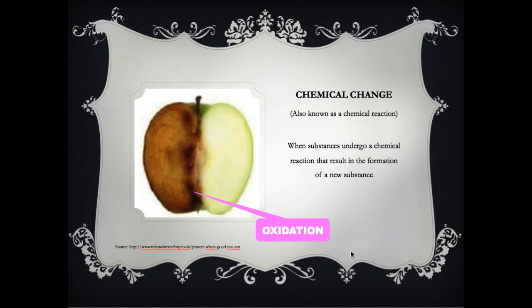A chemical change is different from a physical change because a physical change just changes the shape or the form. A chemical change means that we have a new substance altogether. Another name for a chemical change is also called a chemical reaction. If we look at the apple again, when we see the brown, we know that the apple has reacted with the oxygen in the environment and as a result oxidation has occurred.